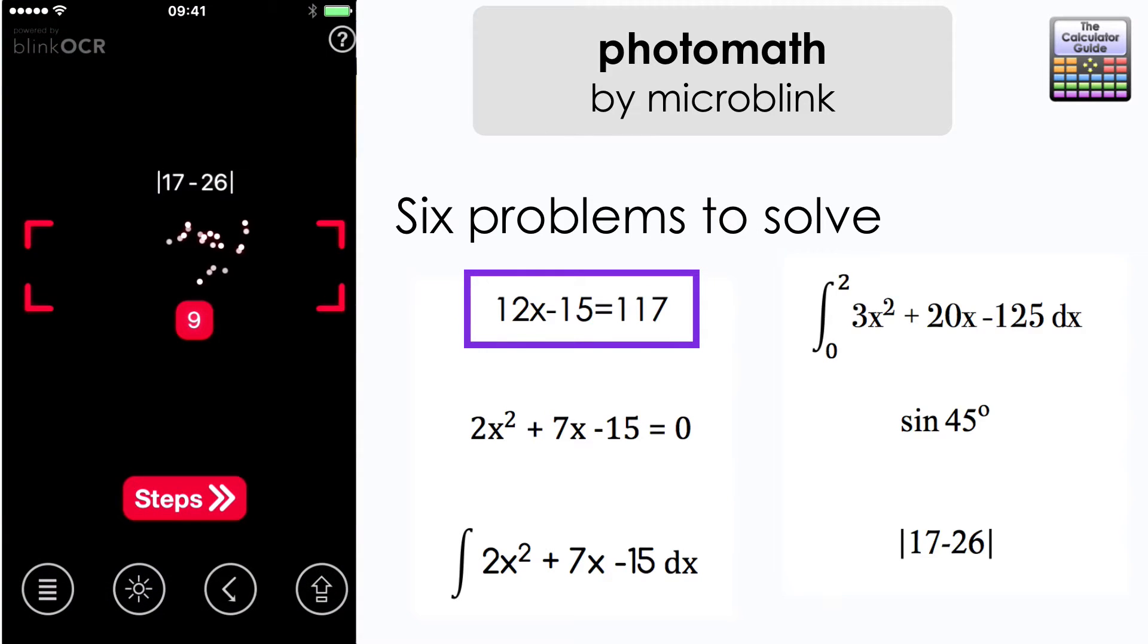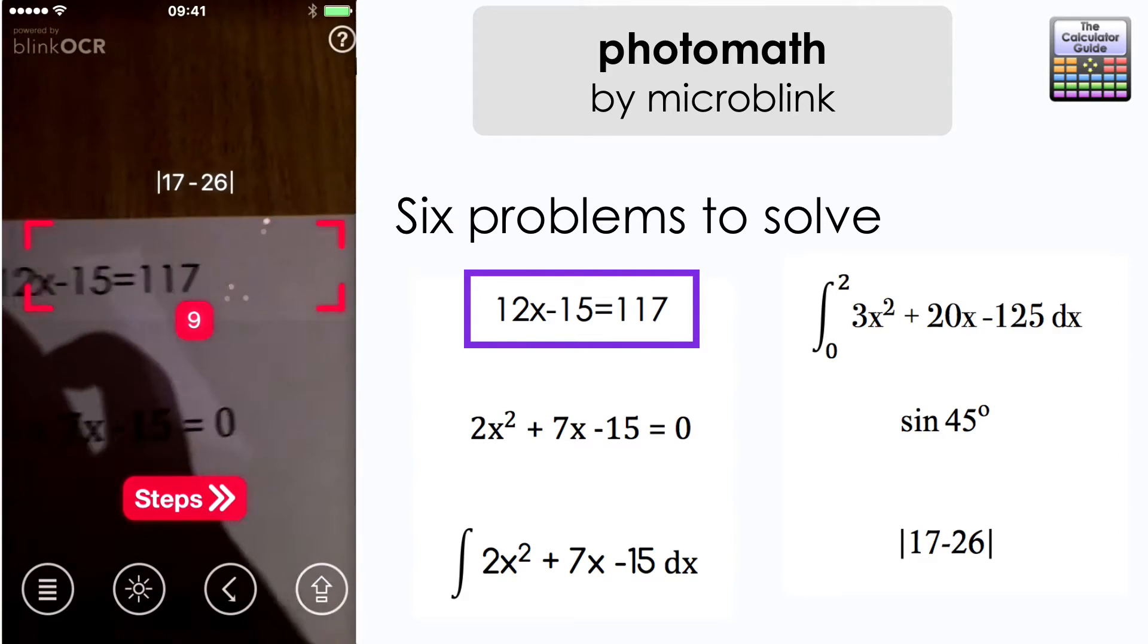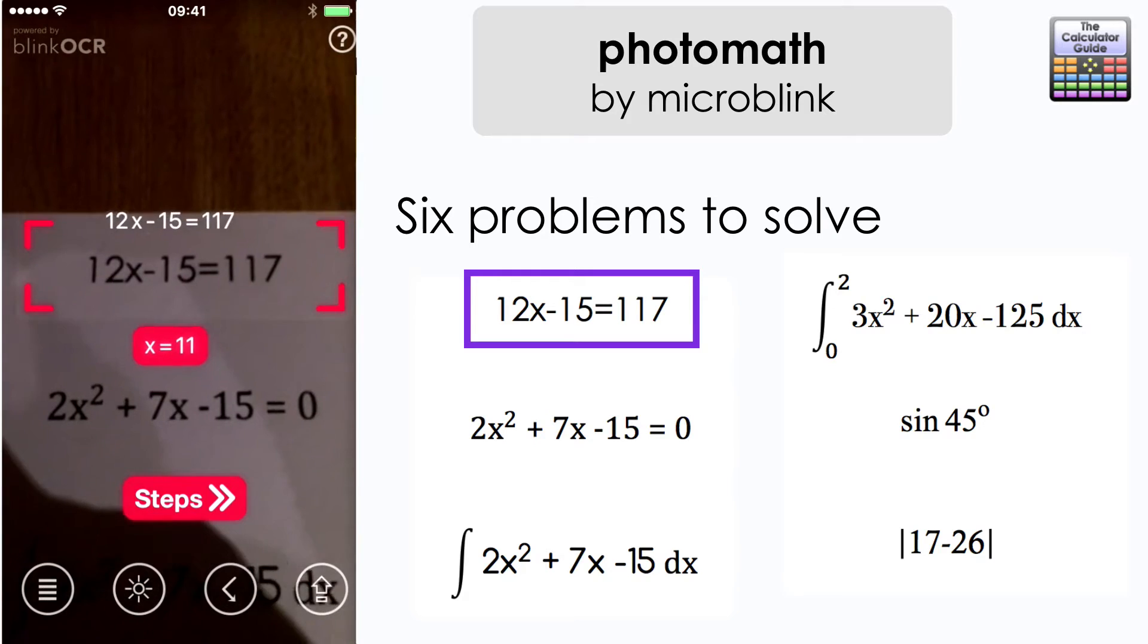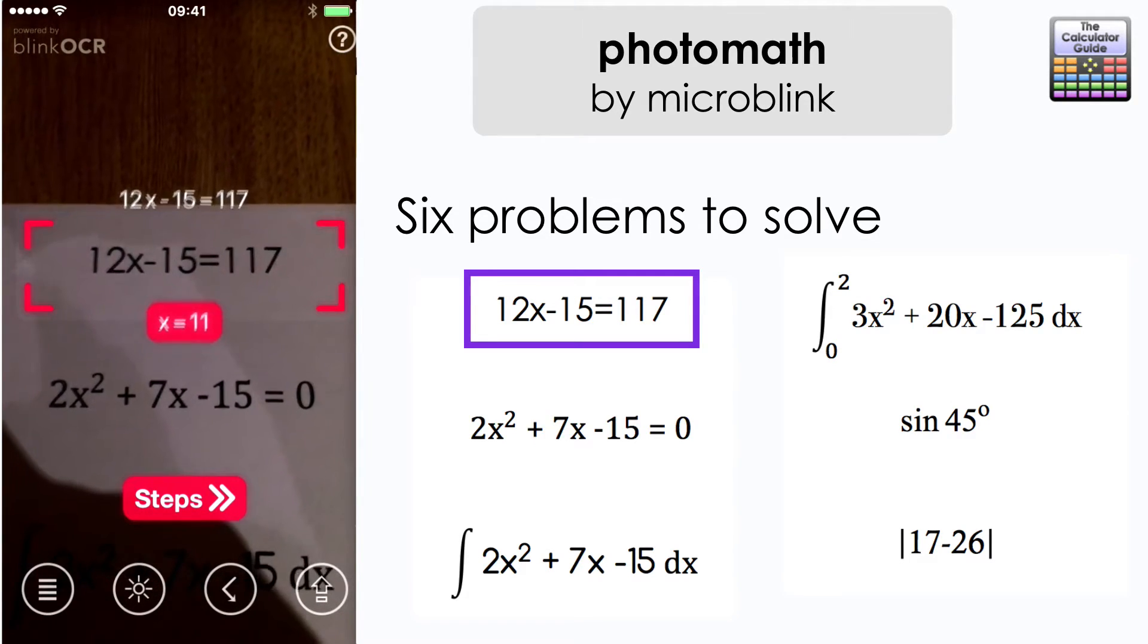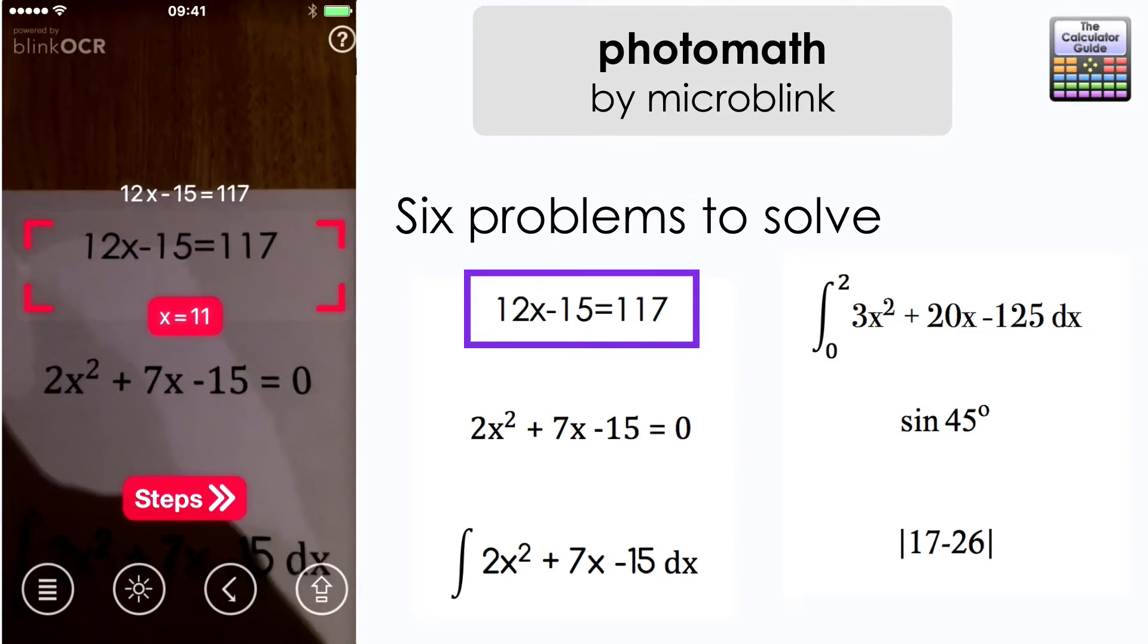So we need to place our problem within the phantom rectangle created by these red corners here and the application periodically scans through to detect the problem. Now we need to check that the problem presented at the top by the application is the same as our actual problem which we have on the paper and it is in this case x equals 11.